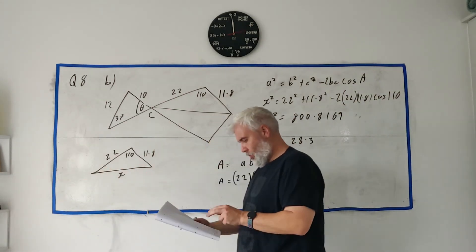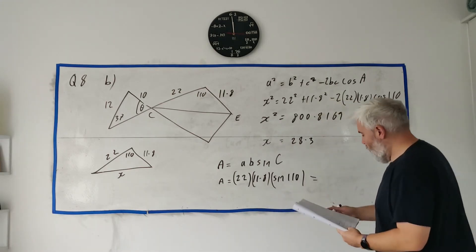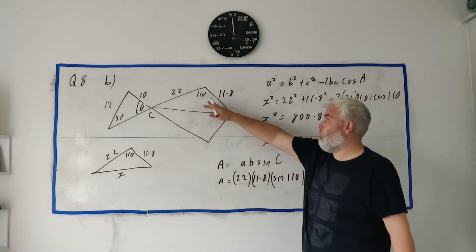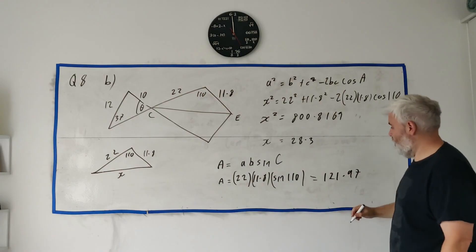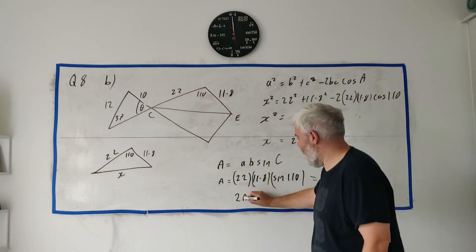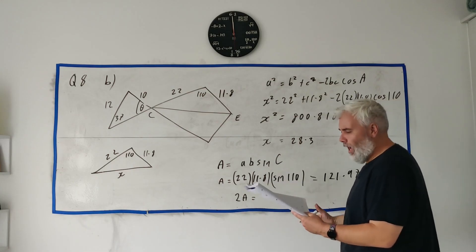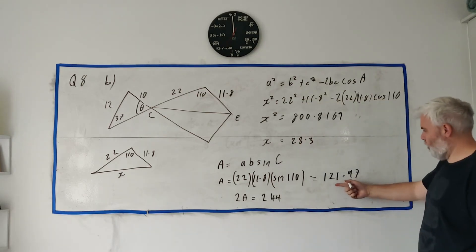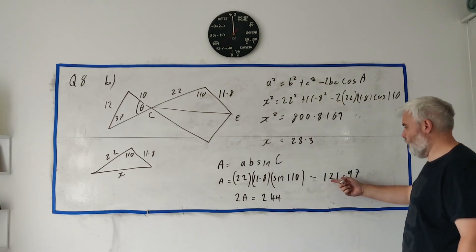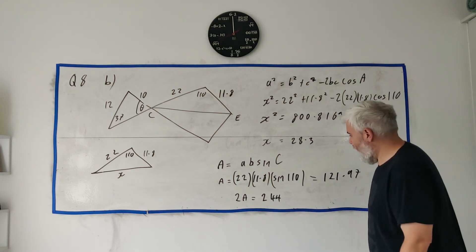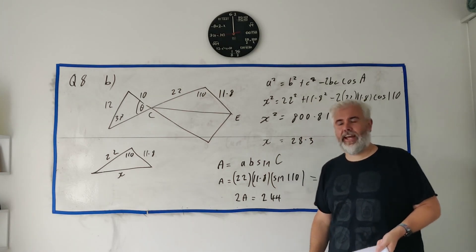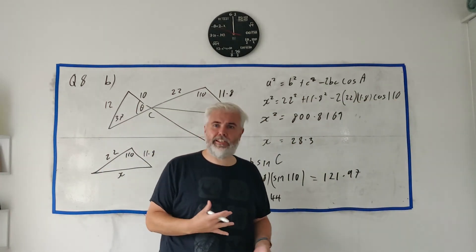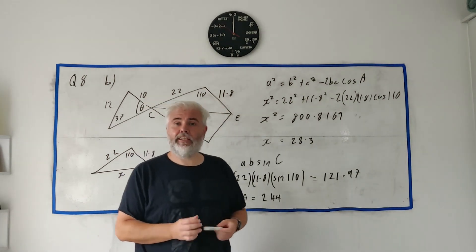Filling in the formula: area equals half times 22 times 11.8 times sine 110. That gives 121.97. But they want the whole area, so multiply by 2: 2 times 121.97 equals approximately 243.9, which rounds to 244 to the nearest whole number. That answers all of question 8. If you have any follow-up questions please let me know in the comments below - thanks for watching, have a great day.